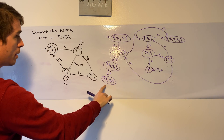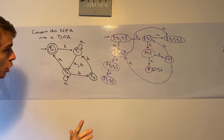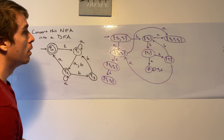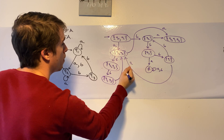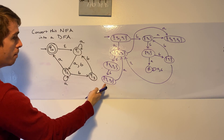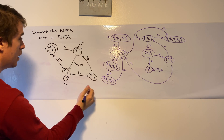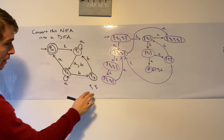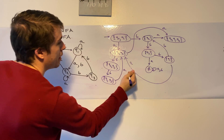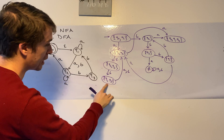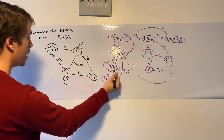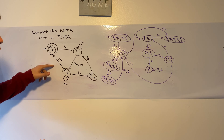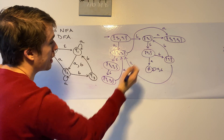For {Q1, Q3} on input A: Q3 doesn't go anywhere, so we do whatever Q1 does on A, which gives {Q1, Q2} — already made. For {Q1, Q3} on input B: Q1 on B goes to Q2, Q3 on B goes to Q1. The epsilon closure is itself, so that state is closed. For {Q2, Q3} on input A: Q3 doesn't go anywhere on A, so we do whatever Q2 does on A, which goes to {Q0, Q1, Q2} — already computed.